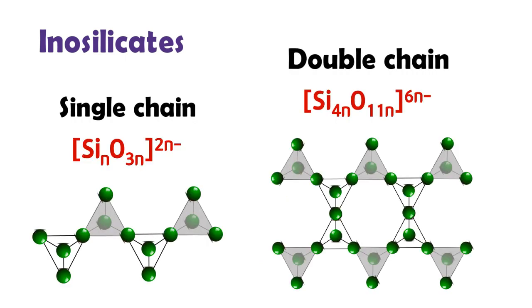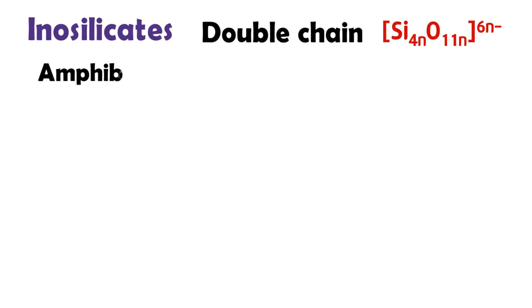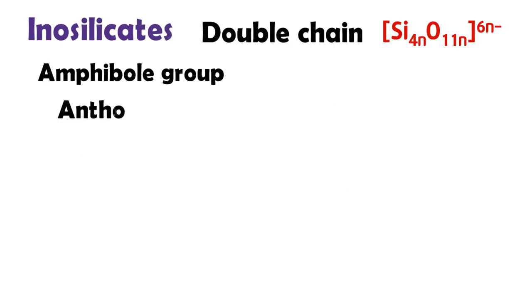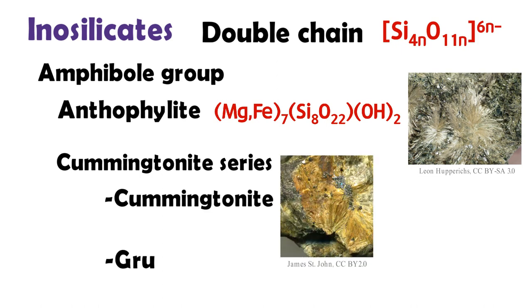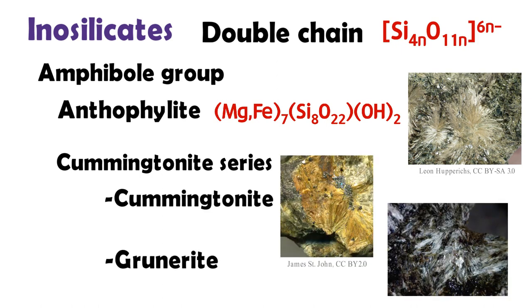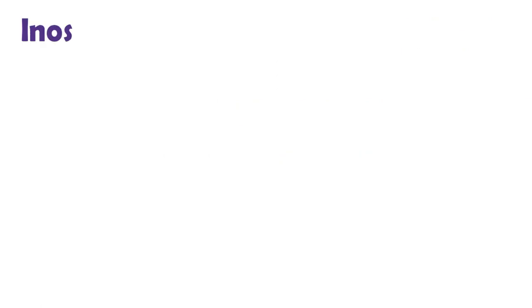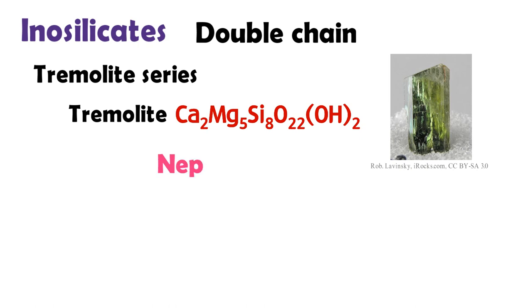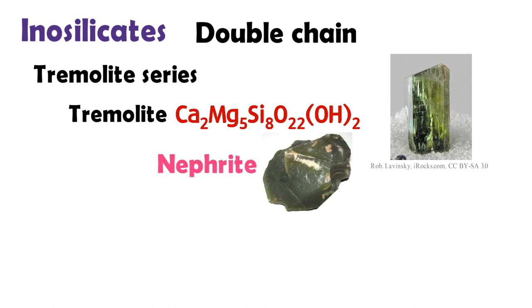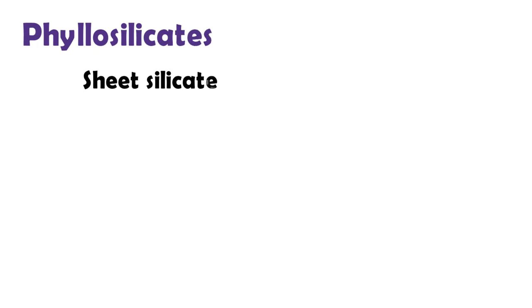Inosilicate have single chain and double chain. In inosilicate minerals of double chain, there are the amphibole group and tremolite series. Anthophyllite, cummingtonite, and grunerite belong to the amphibole group. Tremolite and actinolite belong to the tremolite series. As a gemstone, nephrite, one of the two minerals of jade, is a green variety of tremolite.